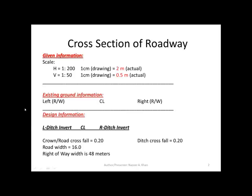When we look at the information we need to plot, we need some given information: horizontal scale and vertical scale. This information is given as 1 to 200 horizontally. Because we are plotting on metric profile paper, one centimeter on the paper equals 200 centimeters actual. We don't plot in centimeters — we plot in meters — so we divide by 100 and get 2 meters. So one centimeter on my drawing equals 2 meters horizontally. Likewise, the vertical scale: one centimeter vertically equals 50 centimeters, which divided by 100 gives 0.5 meters.